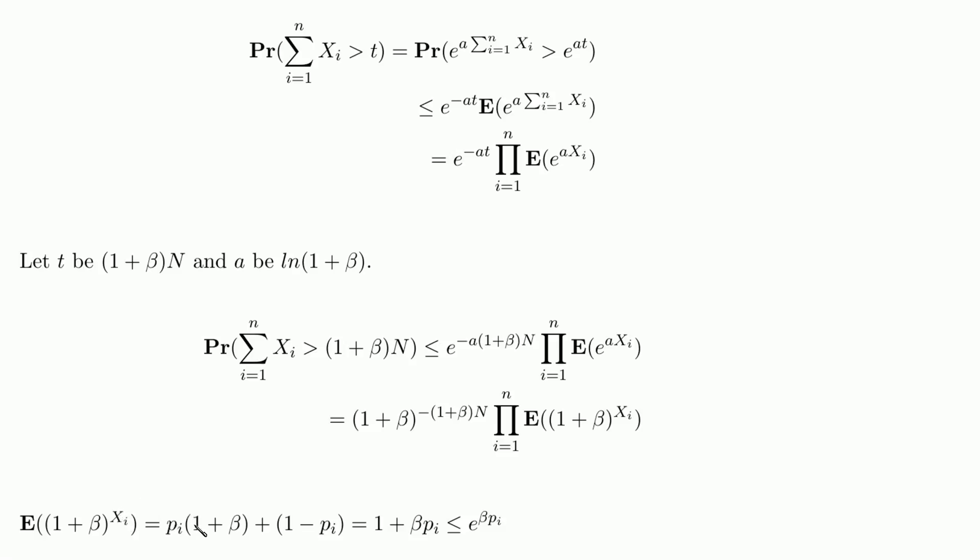So with probability pi, this will turn out to be 1 plus beta. And with probability 1 minus pi, this will turn out to be 1 because anything to the power of 0 just becomes 1.